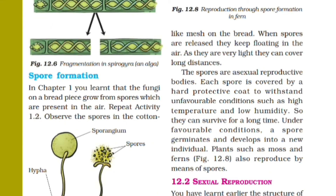When spores are released, they keep floating in the air. As they are very light, they can cover long distances. These spores are asexual reproductive bodies. Each spore is covered by a hard protective coat to withstand unfavorable conditions such as high temperature and low humidity.